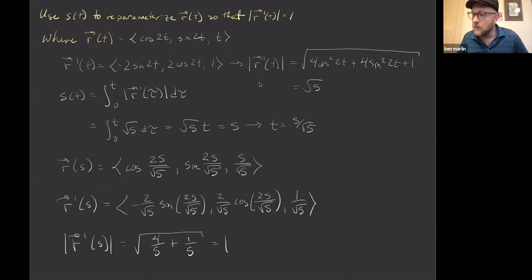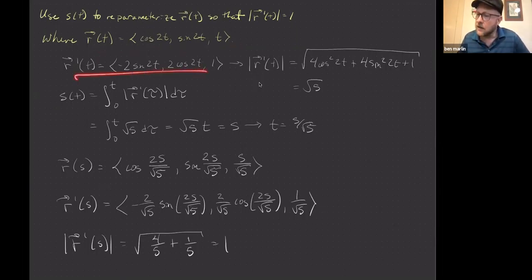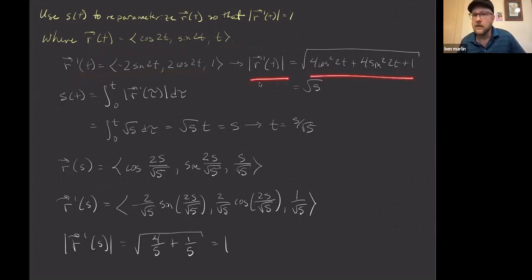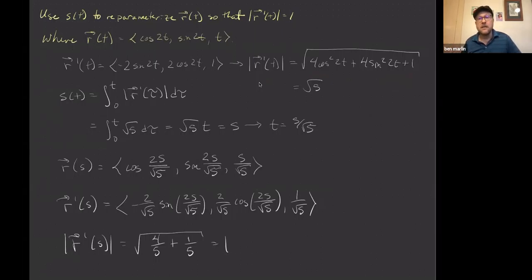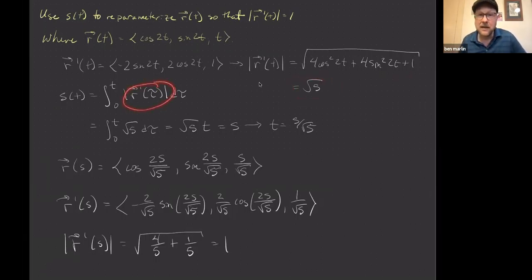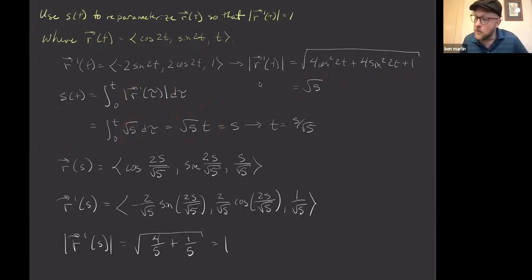So here we've got our r-vector of t: it's got cosine(2t), sine(2t), and t. We take r'(t) — derivative of cosine is minus sine, and you pull out the 2 from the chain rule. When you take the magnitude, you've got a square root with 4cos²(2t) + 4sin²(2t), which combine to give 4, and 4 + 1 = 5. So you end up with just √5. That means integrating this magnitude from 0 to t gives s = √5·t.